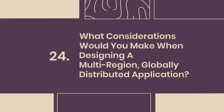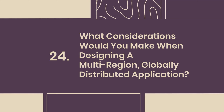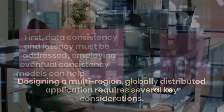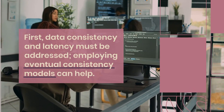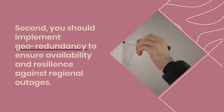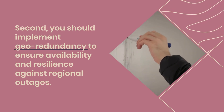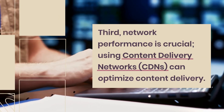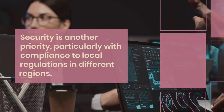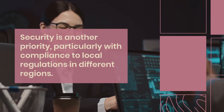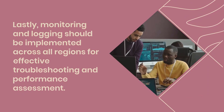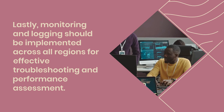Question 24: What considerations would you make when designing a multi-region, globally distributed application? Designing a multi-region, globally distributed application requires several key considerations. First, data consistency and latency must be addressed — employing eventual consistency models can help. Second, implement geo-redundancy to ensure availability and resilience against regional outages. Third, network performance is crucial; using content delivery networks (CDNs) can optimize content delivery. Fourth, security is another priority, particularly with compliance to local regulations in different regions. Fifth, monitoring and logging should be implemented across all regions for effective troubleshooting and performance assessment.